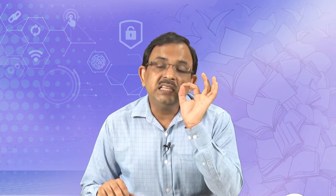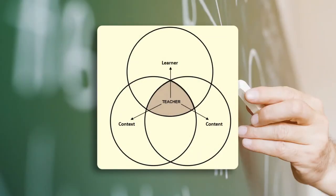In any reflective process, the teacher is at the center. The teacher needs to reflect on three things: about the learner and learners' behavior, about the content — how he or she has dealt with or will deal with the content — and the context in which teaching and learning will take place.